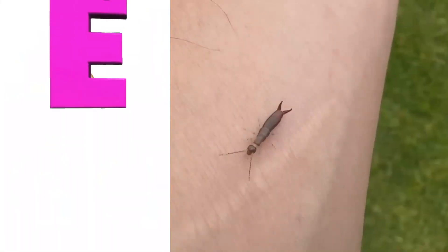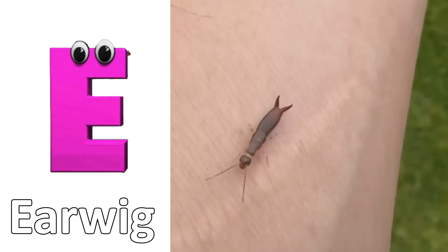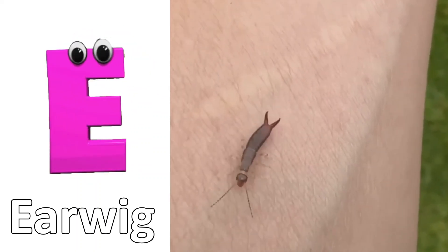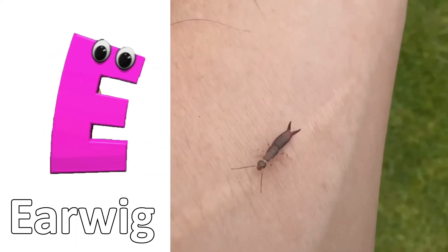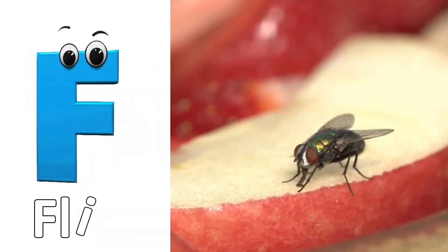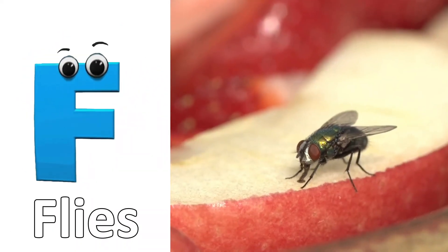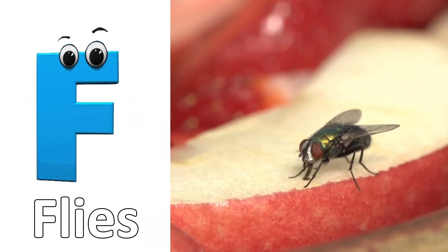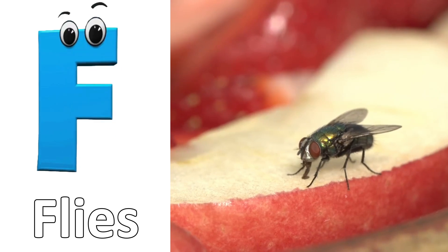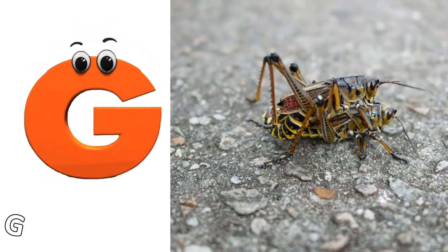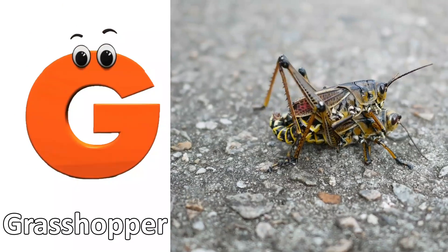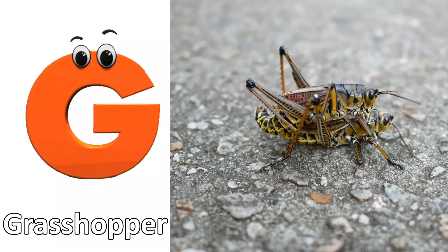E is for earwig. e... earwig. F is for flies. f... flies.